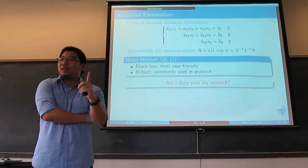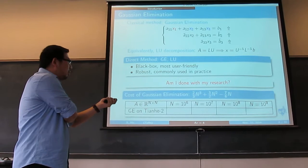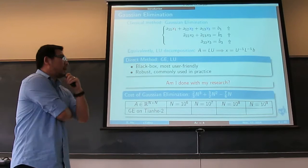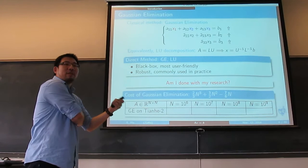Now, the one critical disadvantage of direct methods is the cost. Suppose we look at Gaussian elimination — this capital N is the size of the matrix. So my matrix is N by N. That's the total number of operations you need to finish Gaussian elimination.